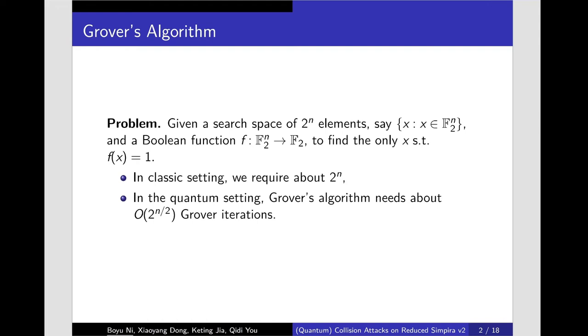Where f is given as a black box, find the only x such that f(x) = 1.